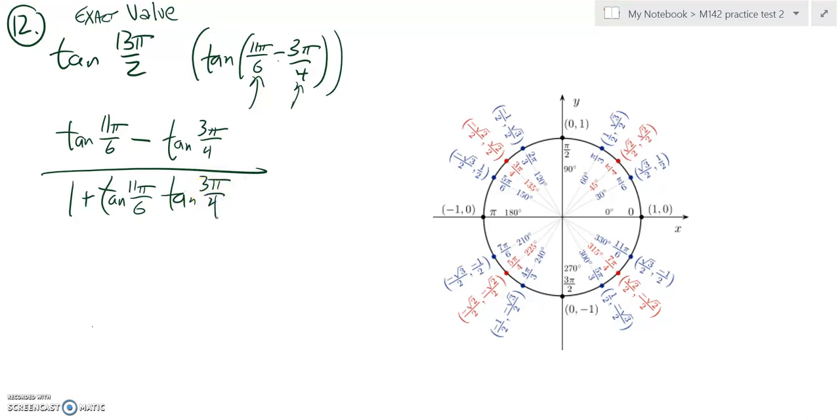All right, so let's figure out what those tangent values are. 3π over 4 is here, its tangent is negative 1, so it's divided by a negative version of itself. 11π over 6 is here, its tangent value is a little more work. Negative 1 half over root 3 over 2, y over x.